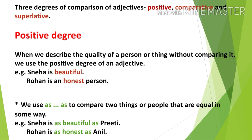Positive degree: when we describe the quality of one person or thing without comparing it, we use the positive degree. It simply describes the quality of a noun or pronoun. For example, 'Sneha is beautiful' — 'beautiful' simply describes one person, Sneha. 'Rohan is an honest person' — 'honest' simply describes one person, Rohan.